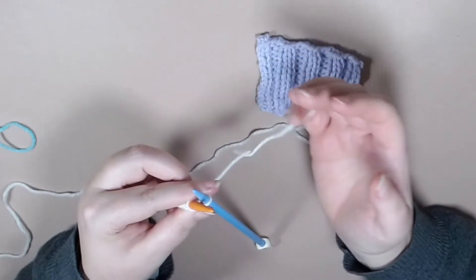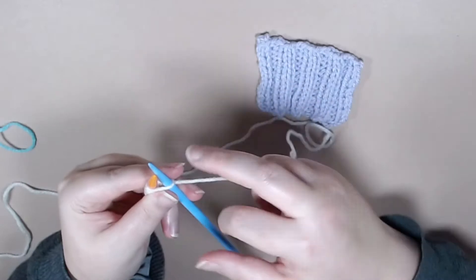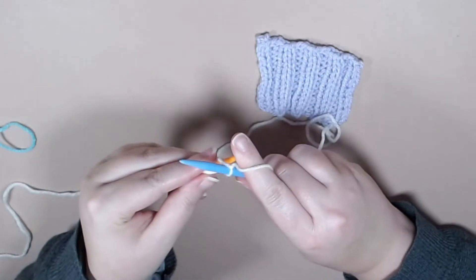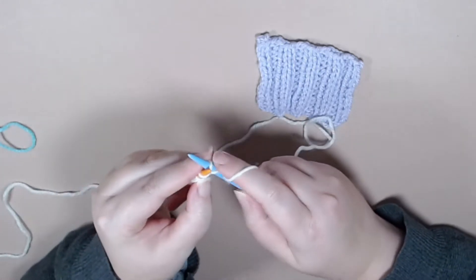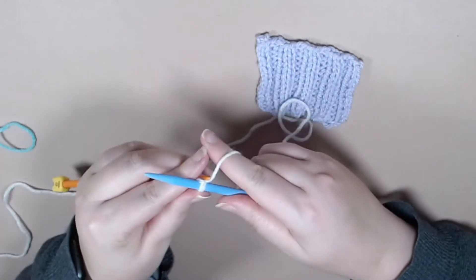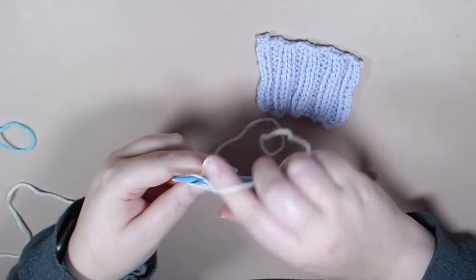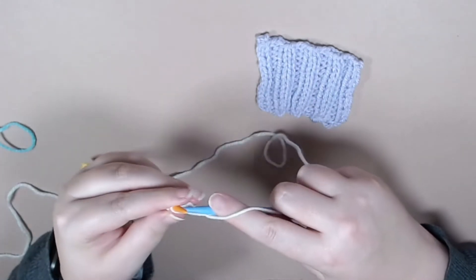So to get started on row 1, you are going to knit 2. And then you will start your repeat of purling 2 and knitting 2. And you will repeat that until the end of your row.